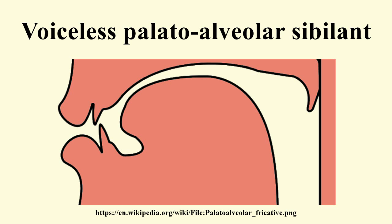Voiceless post-alveolar non-sibilant fricative: The voiceless post-alveolar non-sibilant fricative is a consonantal sound; as the International Phonetic Alphabet does not have separate symbols for the post-alveolar consonants, this sound is usually transcribed with a special symbol. The equivalent X-SAMPA symbol is r_0. Its manner of articulation is fricative, which means it is produced by constricting airflow through a narrow channel at the place of articulation, causing turbulence; however, it does not have the grooved tongue and directed airflow, or the high frequencies, of a sibilant. Its place of articulation is post-alveolar, which means it is articulated with either the tip or the blade of the tongue behind the alveolar ridge.